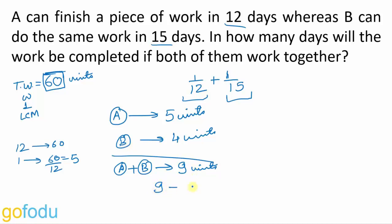Now 9 units of work gets done by both A and B in 1 day. So to finish total work, that is 60 units, they will be needing 60 upon 9, which is 20 upon 3 days. We again applied unitary calculation here. So that's the LCM approach. We will quickly solve a few more questions.